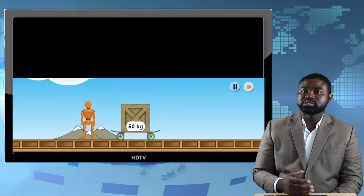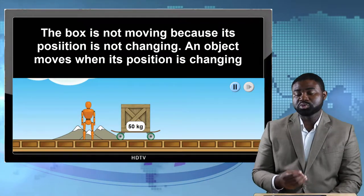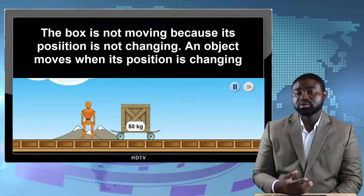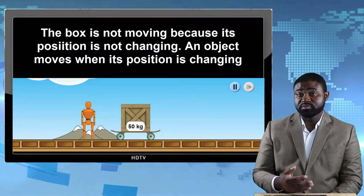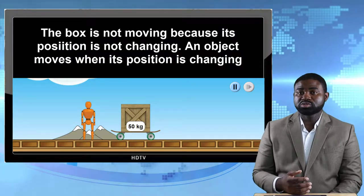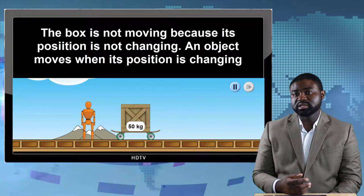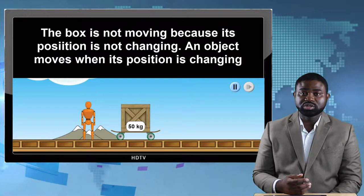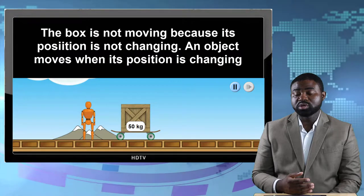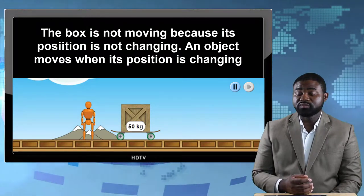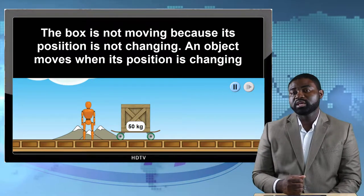An object at rest is not moving because its position is not changing with respect to a reference point or a frame of reference. So we have a box which is at rest, and the box at rest essentially means that it is not moving because its position is not changing. In other words, an object is in motion if the position of that object is changing.